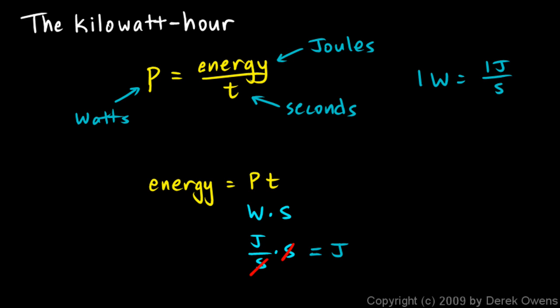So we can see that 1 watt times 1 second gives us 1 joule. But it turns out that any unit of power multiplied by any unit of time would give us a unit for energy. So for example, you could have some unit for power, say the horsepower, multiplied by some unit for time, say a week.